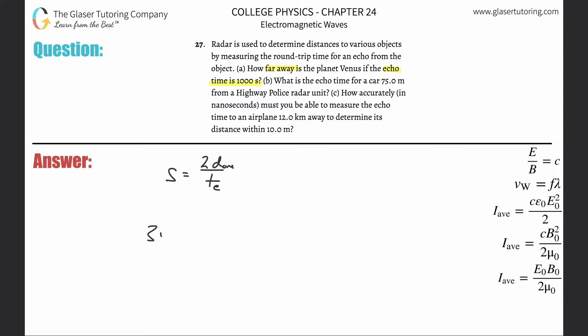The speed of light, that's the speed we're talking about because we're talking about radar. And it's going to be 3 times 10 to the 8. This is going to be 2 times the distance. Now the one-way distance, that's what I want to solve for, divided then by the time, the echo time, a thousand seconds.